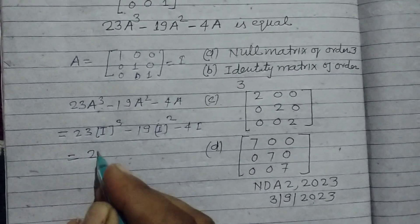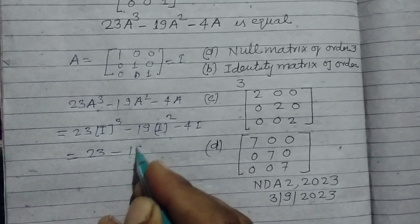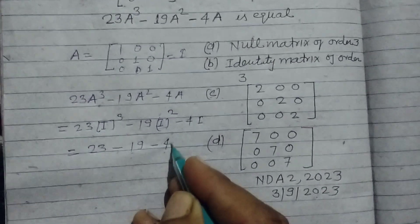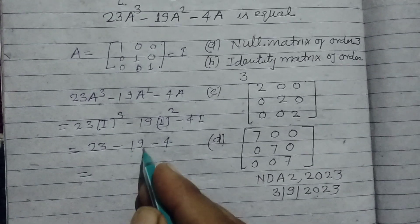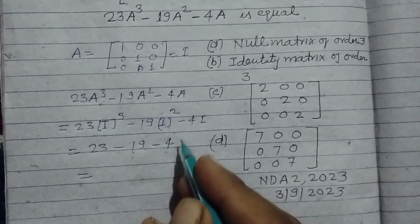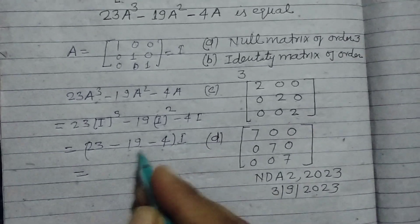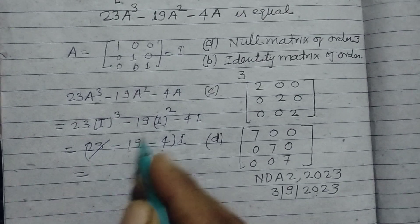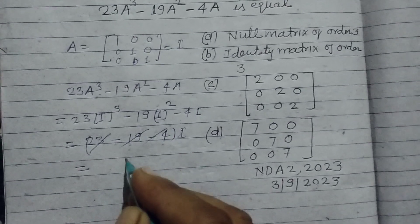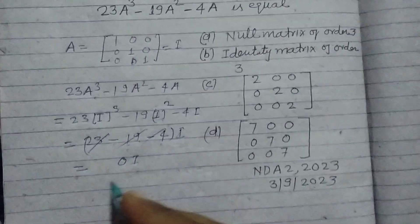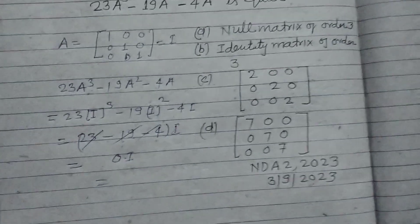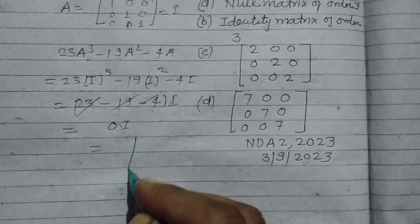This will be 23 minus 19 minus 4, and 23 minus 23. This is 23. So this will be 0I, which means it is a matrix of order 3.